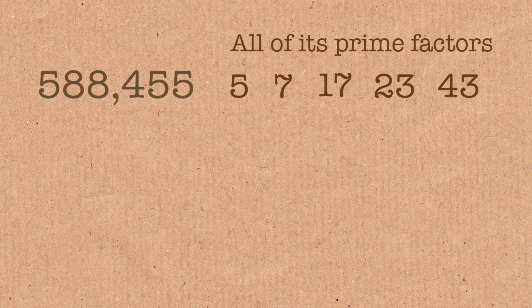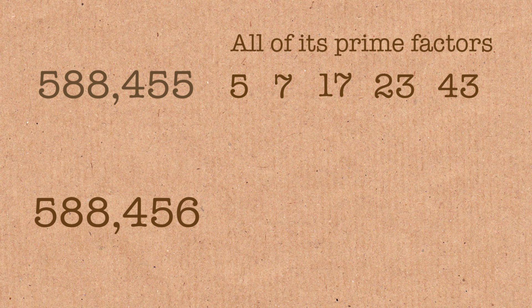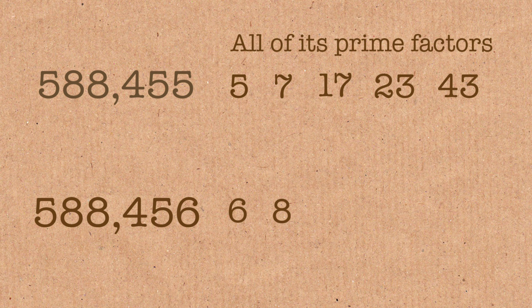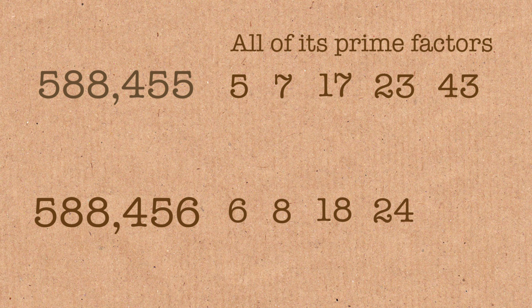588455 is made up of 5 times 7 times 17 times 23 times 43. And if I add 1, then it has factors: 5 plus 1 is 6, 7 plus 1 is 8, 17 plus 1 is 18, 23 plus 1 is 24, and 43 plus 1 is 44.